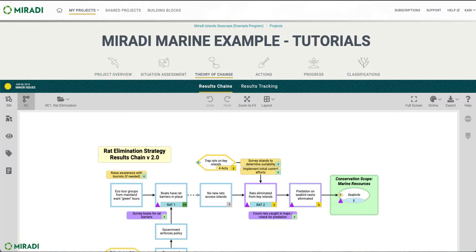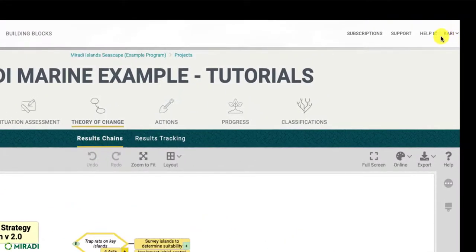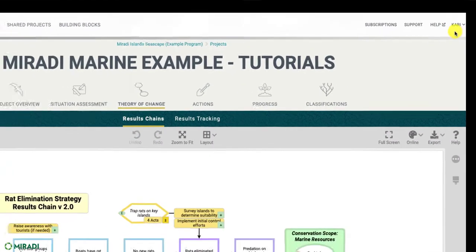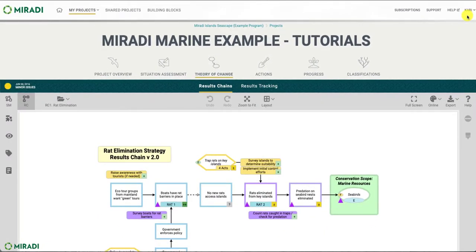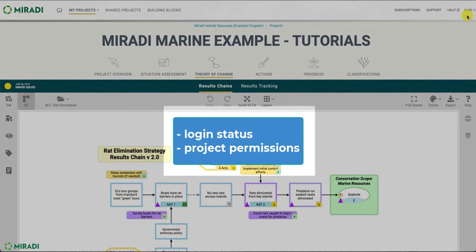Once in your Mirati project, make sure you are logged in using the button in the upper right corner of the Mirati window. Viewing and editing content requires specific permissions for each Mirati project. As you begin working in diagrams, if you are not able to see or edit content as expected, check your login status and your project permissions and contact your project team if needed.